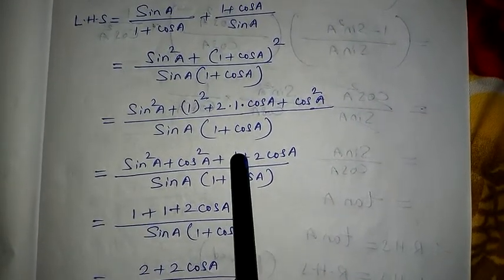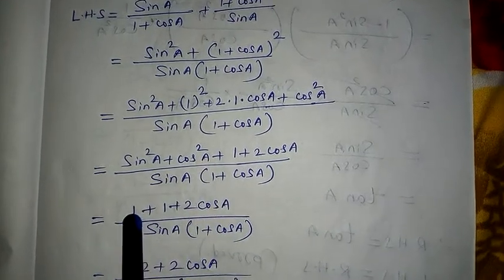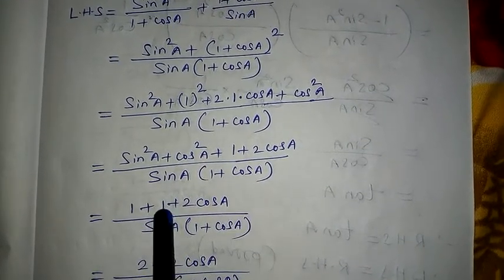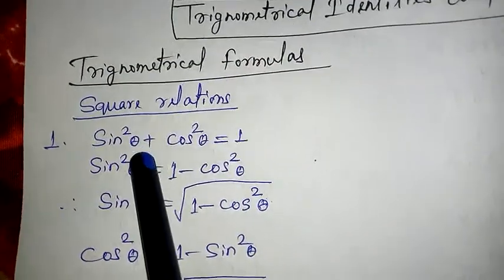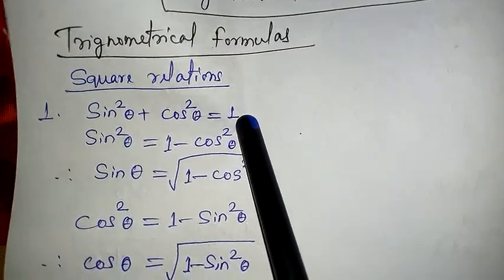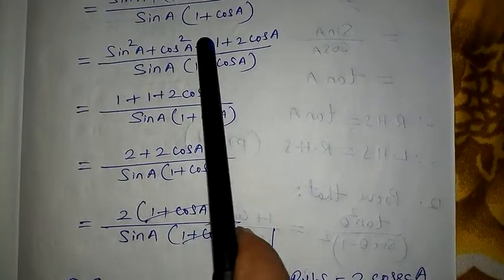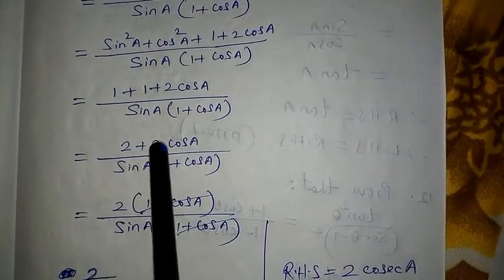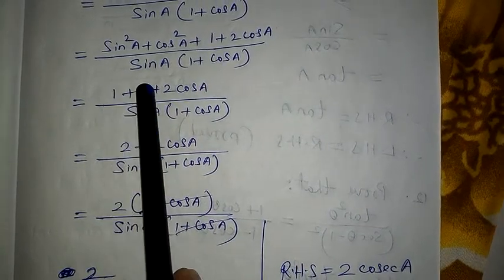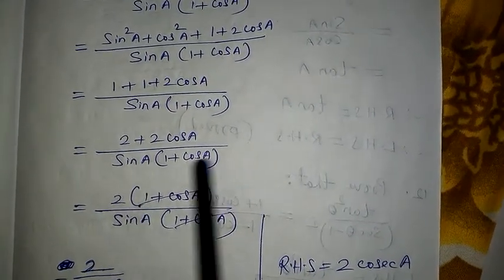Now sin²A + cos²A equals 1 — as we discussed yesterday, sin²θ + cos²θ = 1. So the numerator becomes 1 + 1 + 2cosA = 2 + 2cosA, over sinA(1+cosA).